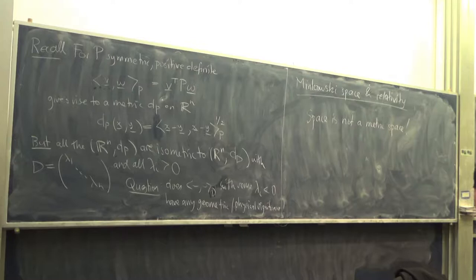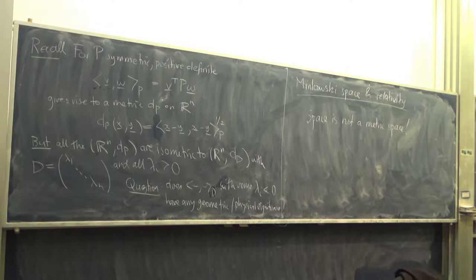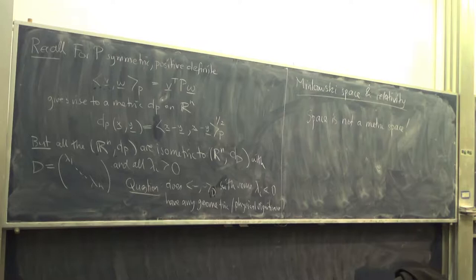It doesn't matter if you include time into R^3 to make R^4 and talk about that as a metric space — it's still wrong. So if a metric space is not the appropriate abstraction to talk about what happens in space and time, what is? That question is what's going to motivate the following discussion of abstractions not covered by the notion of metric space — like topological spaces, non-degenerate bilinear forms, quadratic spaces, and various other things. We've got to deal with this fact somehow — this is what relativity says.